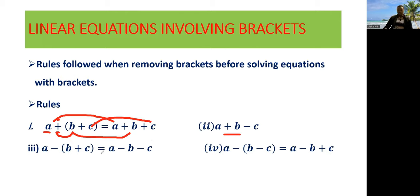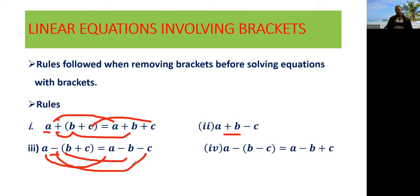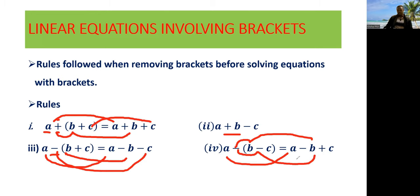Rule number two isn't complete, so we move on to rule number three. If you have a negative sign on the outside of the brackets, you need to multiply that negative sign by all the elements on the inside of the brackets to expand them. So a is written as it is, then negative times b gives you negative b, and negative times positive c gives you negative c. In the other case, negative times negative gives you positive, and we write c at the end.